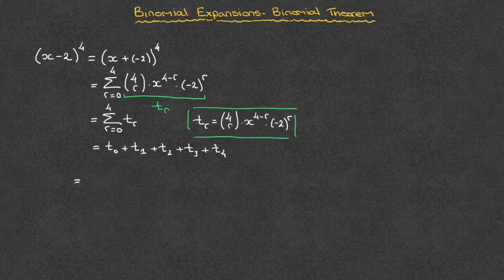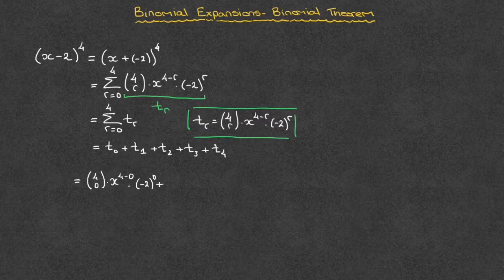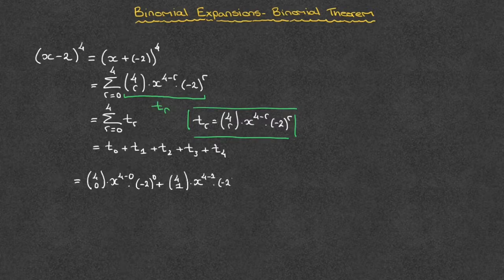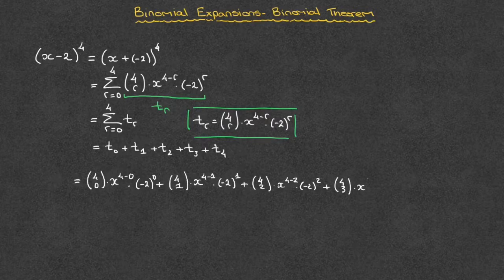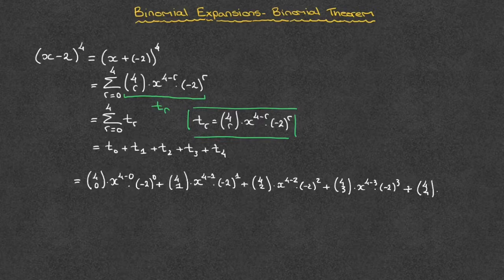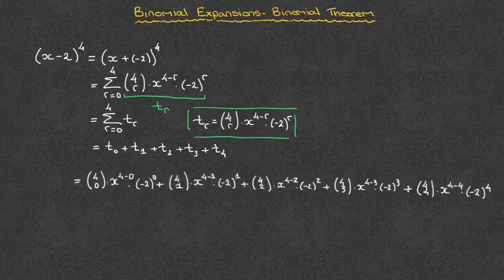So that gives us t0: 4-choose-0 times x to the power of 4 minus 0, times negative 2 raised to the power of 0; plus t1: 4-choose-1 times x to the power of 4 minus 1, times negative 2 raised to the power of 1; plus t2: 4-choose-2 times x to the power of 4 minus 2, times negative 2 raised to the power of 2; and finally we add t4: 4-choose-4 times x to the power of 4 minus 4, times negative 2 raised to the power of 4. At this stage we've written all five terms in this expansion, but we need to simplify each of these terms as much as possible.